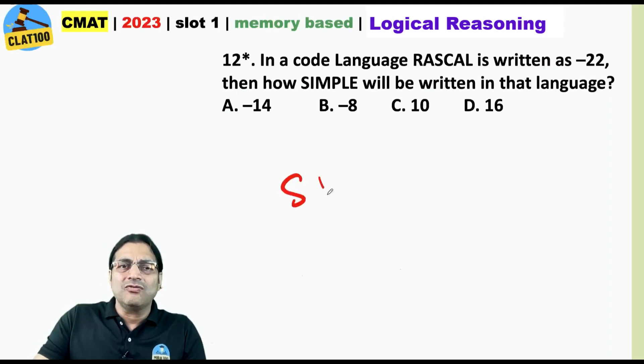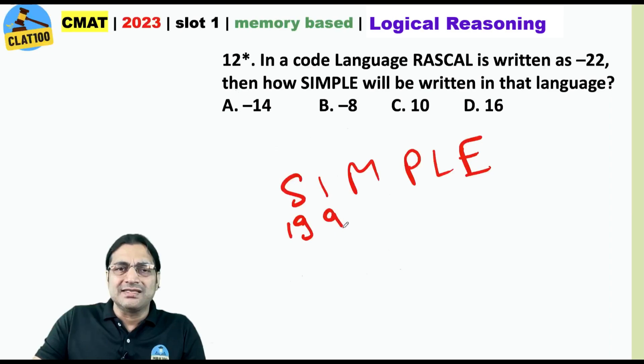Then, what about simple? Let us look at simple also. This is 19, i is 9, m is 13, 16, 12 and 5.